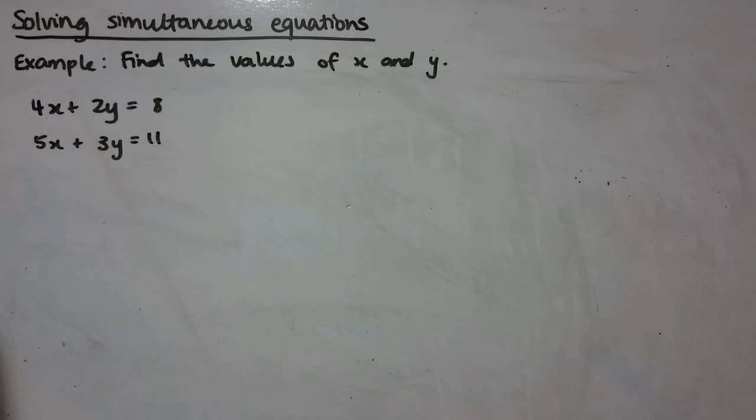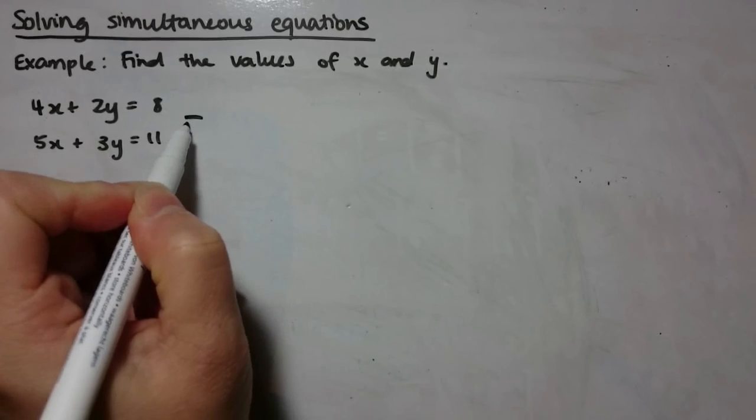So what we've got here is we have an example where we are required to find x and y in these simultaneous equations. We've seen lots of these examples before. We know how to solve these equations by hand using the substitution method and the elimination method. This is just a slightly different method using matrices.